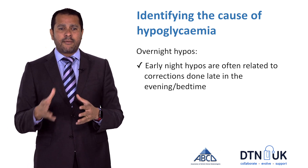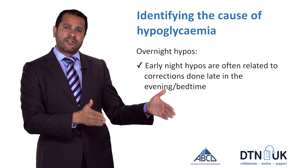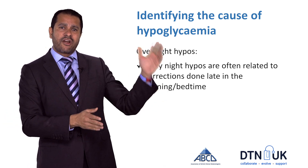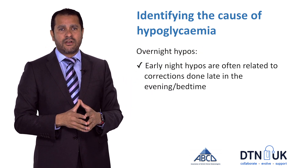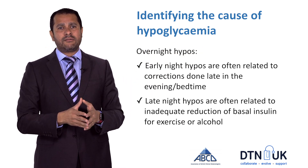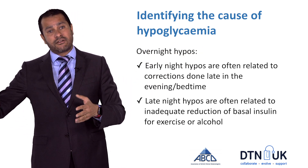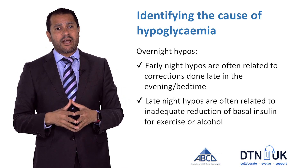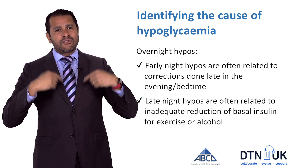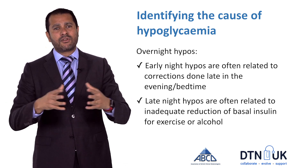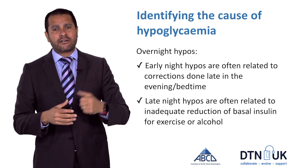In particular, hypoglycemia early in the night is often related to correction doses done for your evening meal. Whereas hypoglycemia early in the morning or later through the night is often related to your background insulin, and not reducing it in response to events like alcohol or exercise.